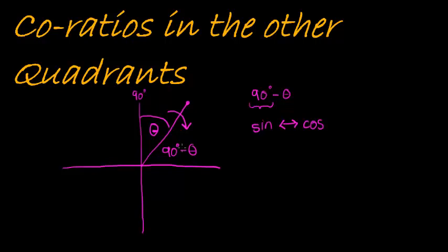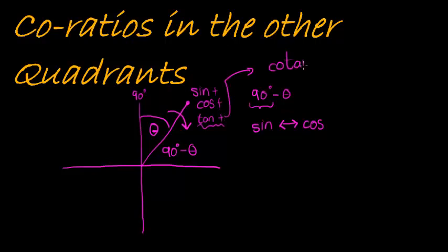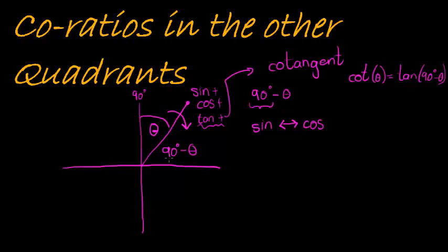In the first quadrant, that's not a problem because sine is positive, cos is positive, and tan is also positive. Tan also has a co-ratio called cotangent, shortened as cot, and cot of theta is equal to tan of 90 minus theta. That's just for interest's sake — we are only going to look at sine and cos.